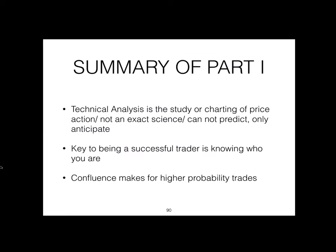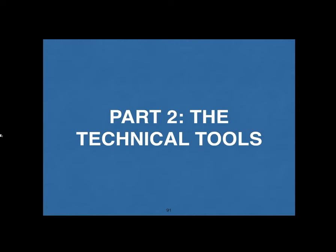To summarize Part One, there are three important points. First, technical analysis is the study or charting of price action — it is not an exact science; you can only anticipate, you cannot predict. Two, the key to being a successful trader is knowing who you are. Three, confluence is key to higher probability trades. Now let's go to Part Two: the technical tools.